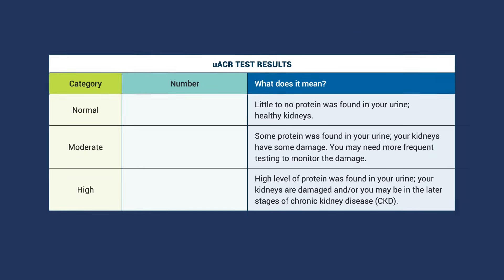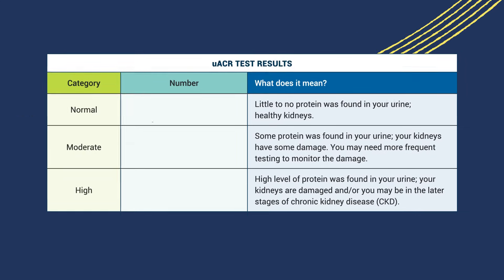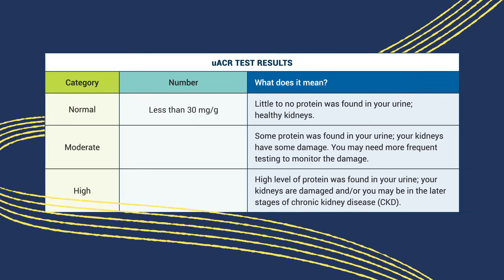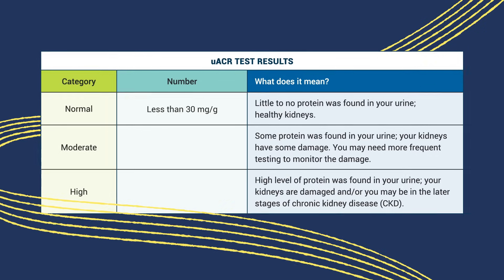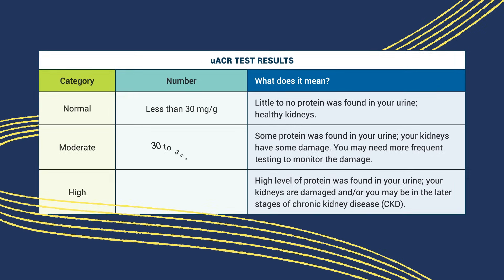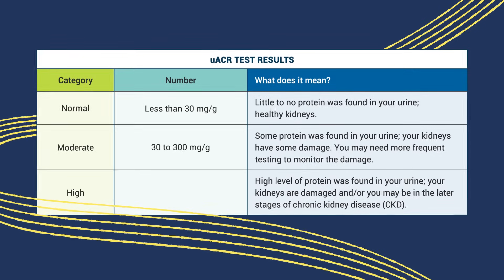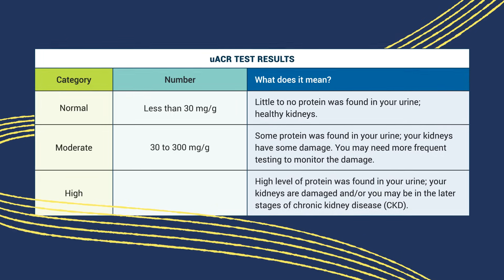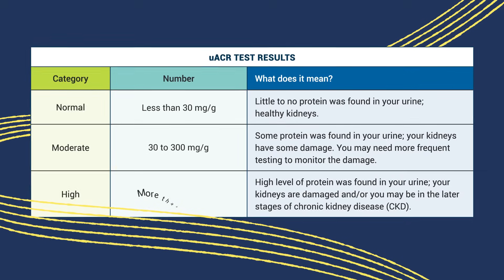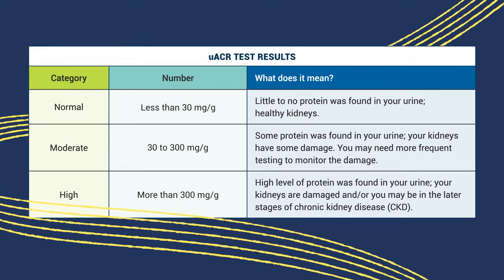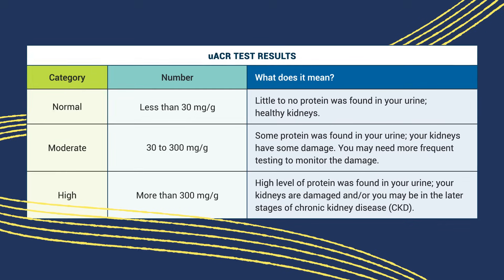Normal to mildly increased protein levels are less than 30 mg per gram. Moderately increased is 30 to 300 mg per gram. Severely increased is 300 or more mg per gram.